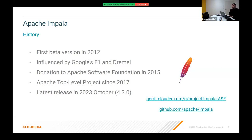Apache Impala was renamed during the donation process — before, it could be found as Cloudera Impala, but now it's called Apache Impala. The project is located at a link where it's reachable; issues are tracked through the Apache JIRA and there is a read-only copy on GitHub.